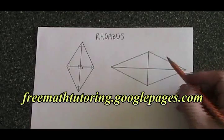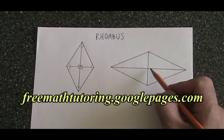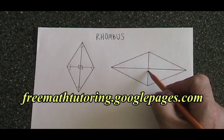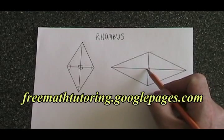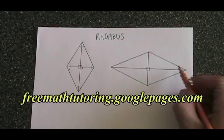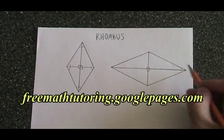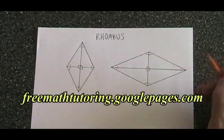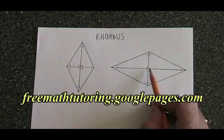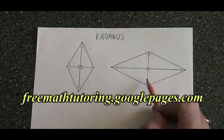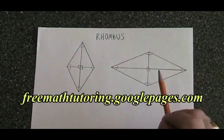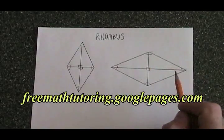So to review: in this rhombus, the angles in the middle all have to be 90 degree angles. The angles on the outside have to add up to 360 degrees. The diagonals cross each other at right angles, but the diagonals are not equal in length. And the sides are all equal in length.